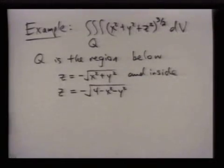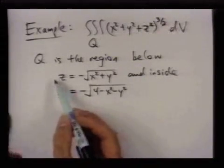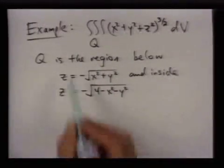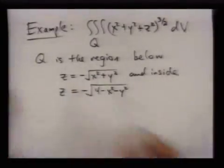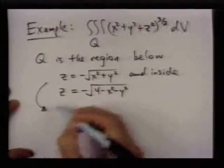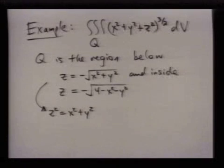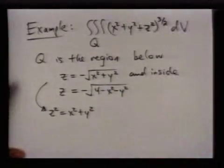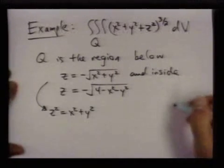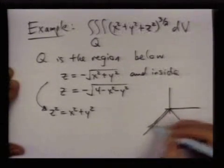The first step is to figure out what this region actually looks like. First think about what these equations represent. Z equals negative square root of x squared plus y squared - if you square both sides you get an equation you should recognize as a cone. Since the square root and negative are taken, it's the cone below the xy plane pointing down.